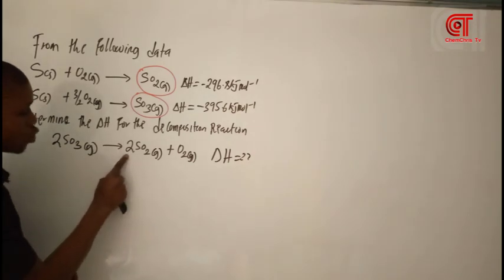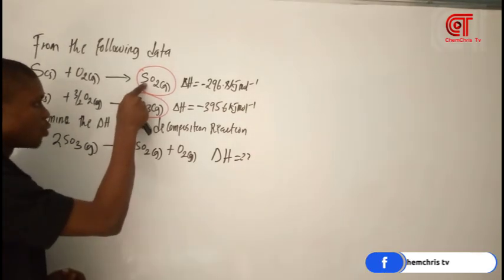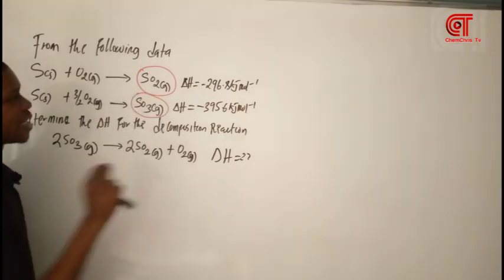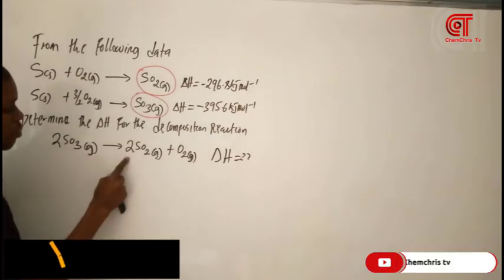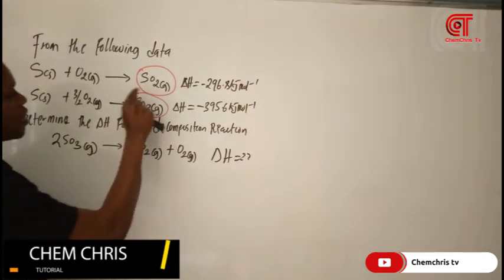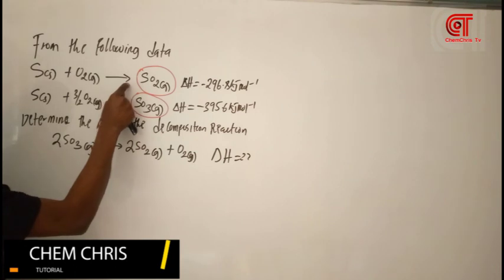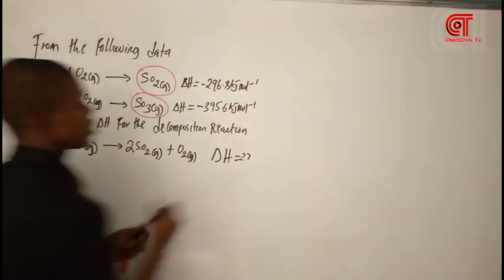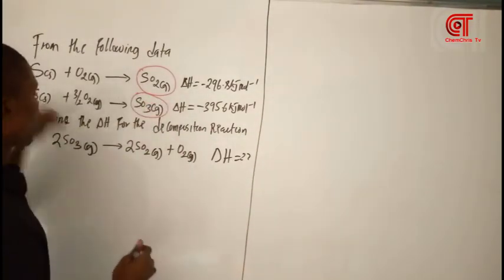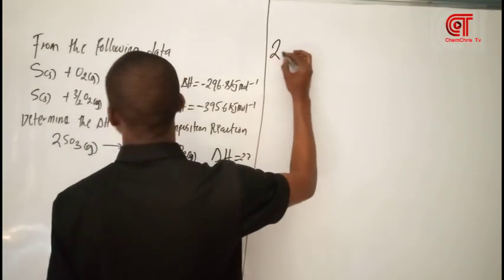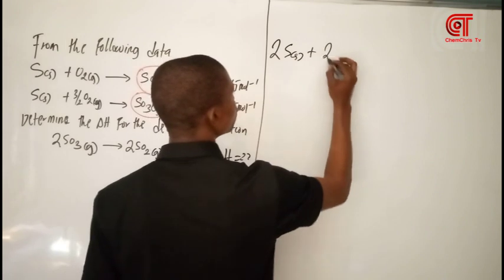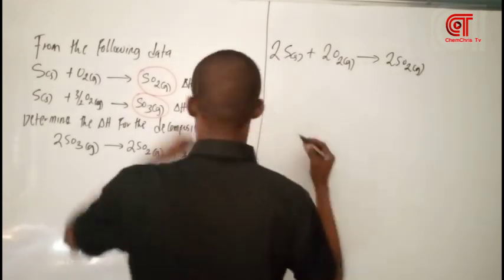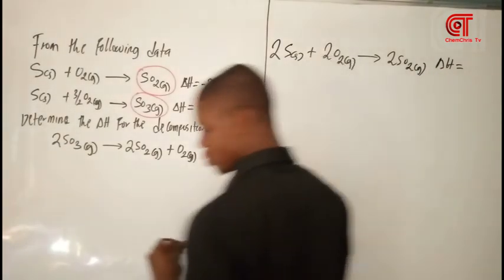But here we have two moles and in the main equation we have one mole. So to make them equal, I want to multiply the first equation by two. The reason I'm multiplying by two is that two is needed here. So if I multiply it by two, here it will be: 2S solid plus 2O2 gas gives 2SO2 gas. And I'll also multiply the delta H by two.